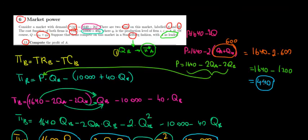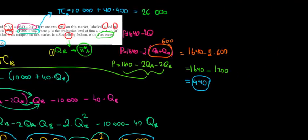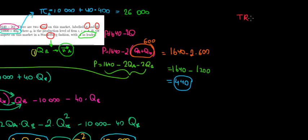We know how much quantity player A sells, and the total cost function is 10,000 plus 40 times QA. With QA equal to 400, total cost equals 10,000 plus 40 times 400, which is 10,000 plus 16,000, equaling 26,000. The total revenue of player A is the price times quantity: 440 multiplied by 400.